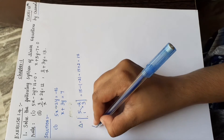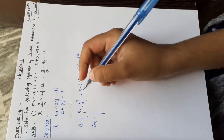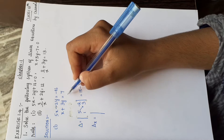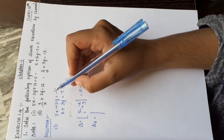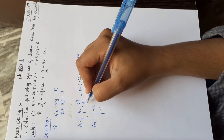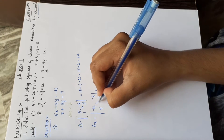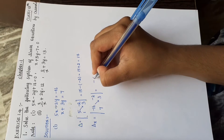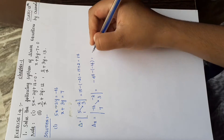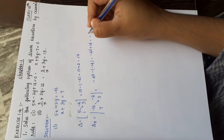Next, find delta x. Replace the first column with the constant terms: [-16; 7], keeping the second column as [-2; 3]. Delta x = ((-16)×3) minus (7×(-2)) = -48 minus (-14) = -48 + 14 = -34.